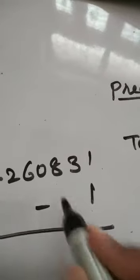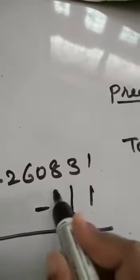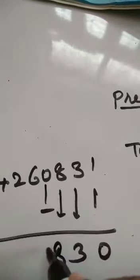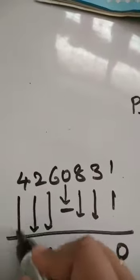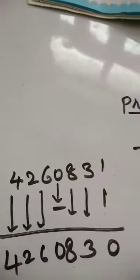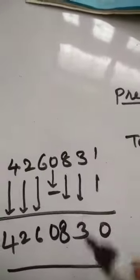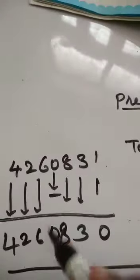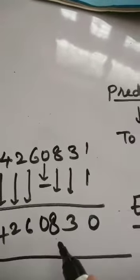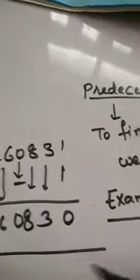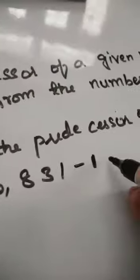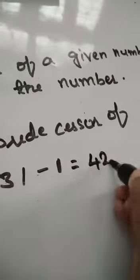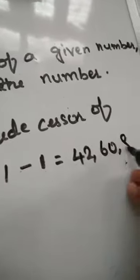So 1 minus 1 is 0. This 3 will be as it is. Next, 8 will be as it is. This 0 will be as it is. Next, this 6 will be as it is. 2 will be as it is. And this 4 will be as it is. So 1 minus 1 is 0, then 3, 8, 0, 6, 2, 4. So this is 42,60,830. If we subtract 1 from the given number, we will get 42,60,830.